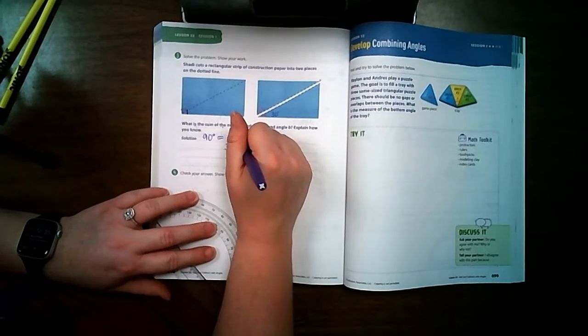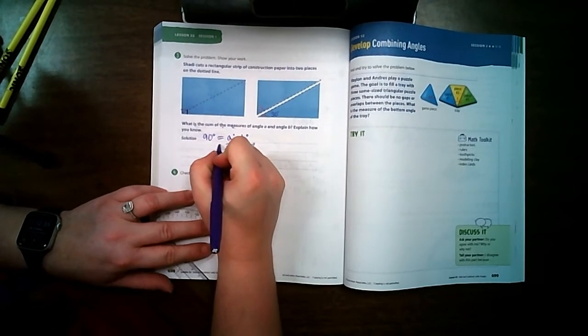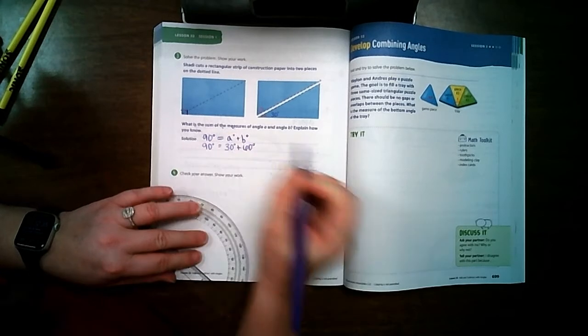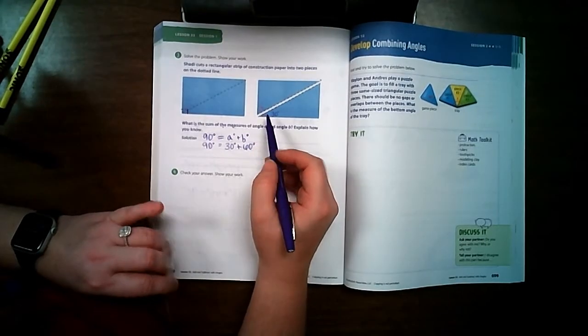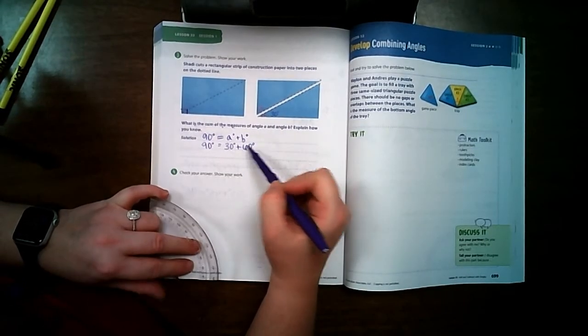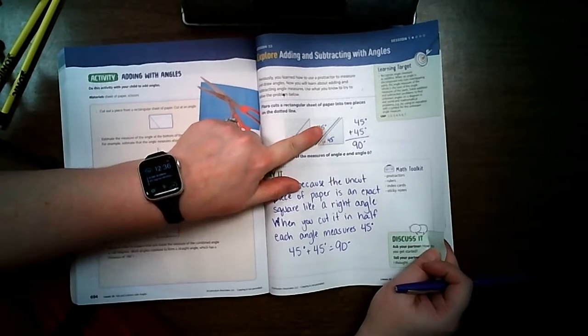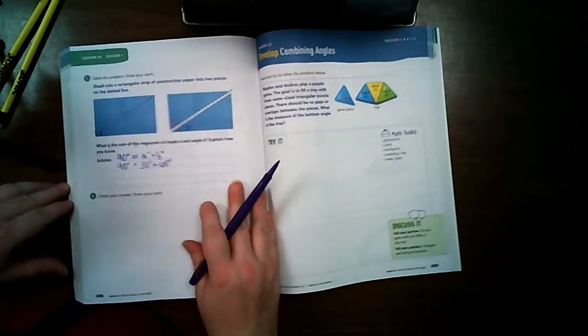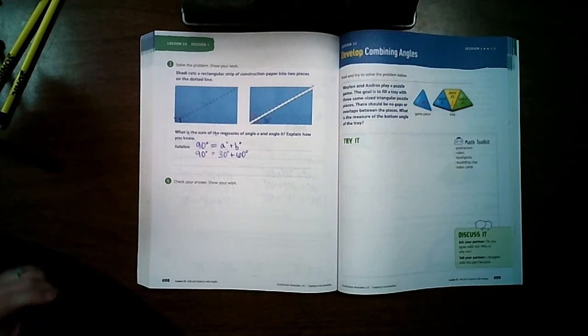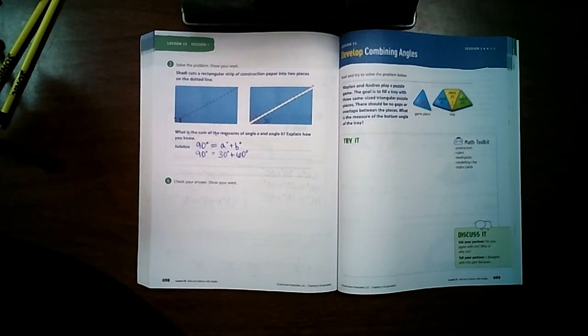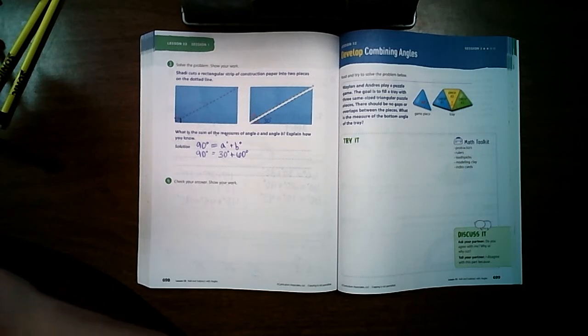So 30 degrees plus 60 degrees equals 90 degrees. So in this instance, the angles are worth different amounts. Our first problem, we cut it in half. So each angle was worth 45 degrees. But in this problem, it does not say that it was cut in half. It just says that it was cut. So we have to measure the angles to make sure that they're not 45 degrees, that they're something different.